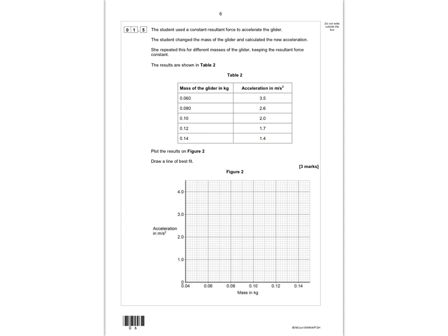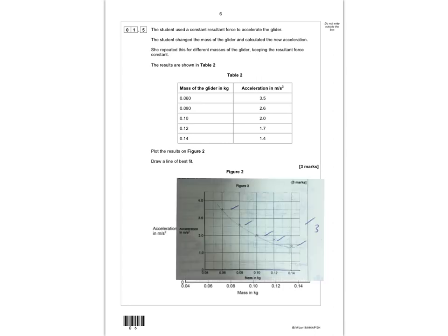In the next part you're expected to draw a graph. It gives information about what the student has done — mass of glider in kilograms on one axis and acceleration in metres per second squared on the other. The graph is worth three marks: two marks for plotting points accurately (within half a small square), and the final mark for drawing a correct line of best fit, which in this case is a curve.